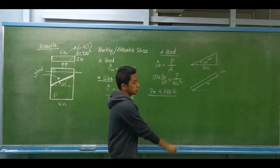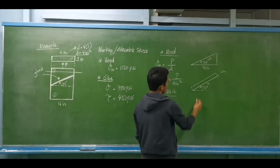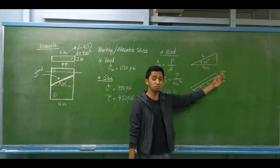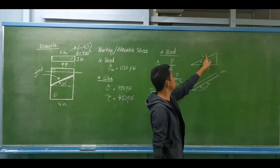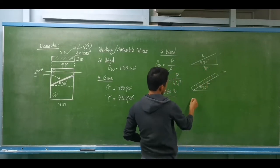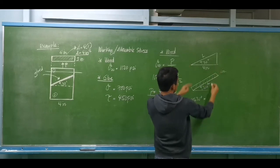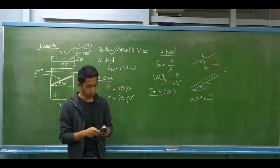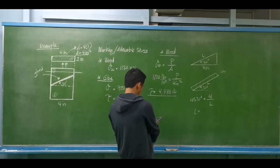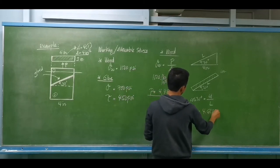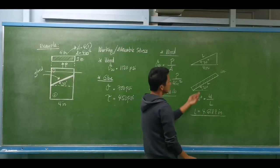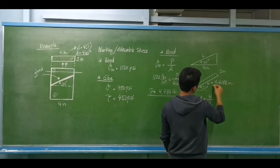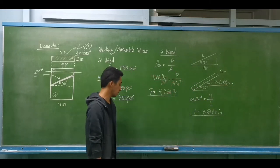The inclined area has an inclination of 30 degrees. The thickness remains one inch, but we need a new value for the length of this rectangular area. Using trigonometry: cosine of 30 degrees equals four inches divided by the length, so the length equals four divided by cosine of 30 degrees, which equals 4.6188 inches. So the inclined cross-section is one inch thick by 4.6188 inches long.